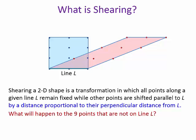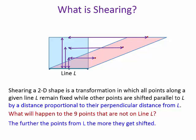What does that really mean? Let's illustrate with 3 points. The point that is nearer got moved a little. The point that is further away got moved more. And the point that is on the top side of the rectangle got moved the most. So points are shifted by a distance proportional to the perpendicular distance from line L — basically, the further the points from L, the more they get shifted.